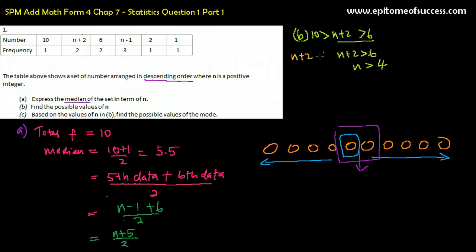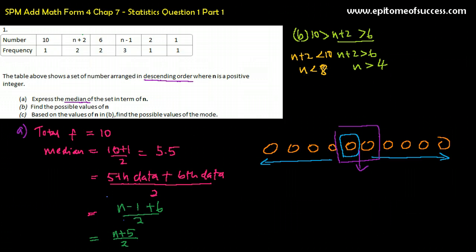Now the next inequality: N plus 2 is smaller than 10, so therefore N must be smaller than 8. So now, if N is smaller than 8 but bigger than 4, that means N is between 4 and 8. We can conclude that N has to be between 4 and 8 for this particular condition.